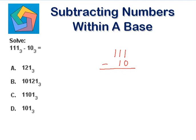1 minus 0 is 1. 1 minus 1 is 0. And let's put 0 here. 1 minus 0 is 1. So this is 101 to the base 3.